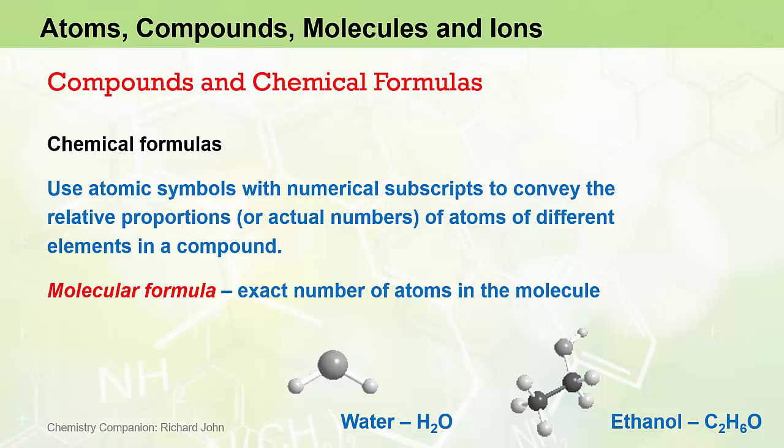In the molecular compound ethanol, the chemical formula C2H6O indicates that there are exactly two atoms of carbon, six atoms of hydrogen, and one atom of oxygen.